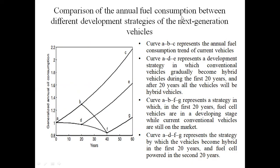This slide shows the comparison of annual fuel consumption between different strategies of the next two decades vehicles. Curve ABC represents the annual fuel consumption trend of current vehicles — meaning internal combustion engine vehicles — which is increasing every ten years. The graph shows this trend continuing to increase over the next six to ten years.